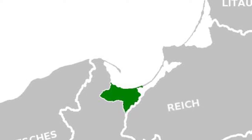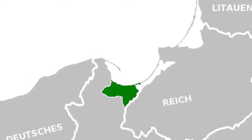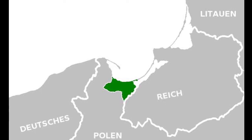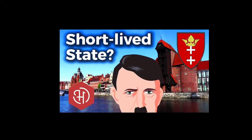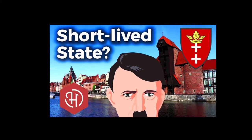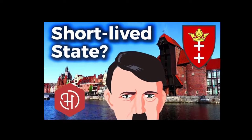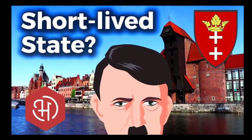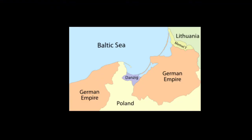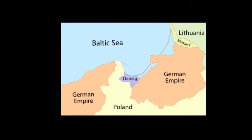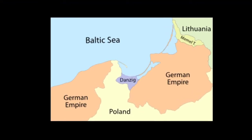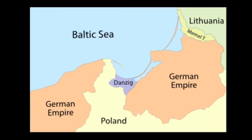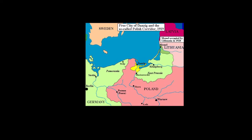The region was to remain separated from the post-war German Republic and from the newly independent Polish Republic. The Free City was under League of Nations protection and put into a binding customs union with Poland. Poland was given certain rights pertaining to communication, the railways, and port facilities in the city.